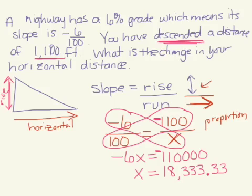Rounding to the nearest whole number, we look at the number behind it. Since it's less than 5, then we don't change. That means we've gone a horizontal distance of 18,333 feet.